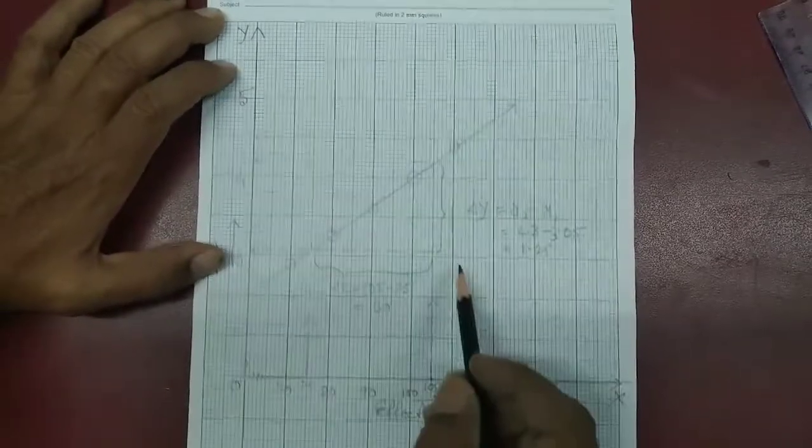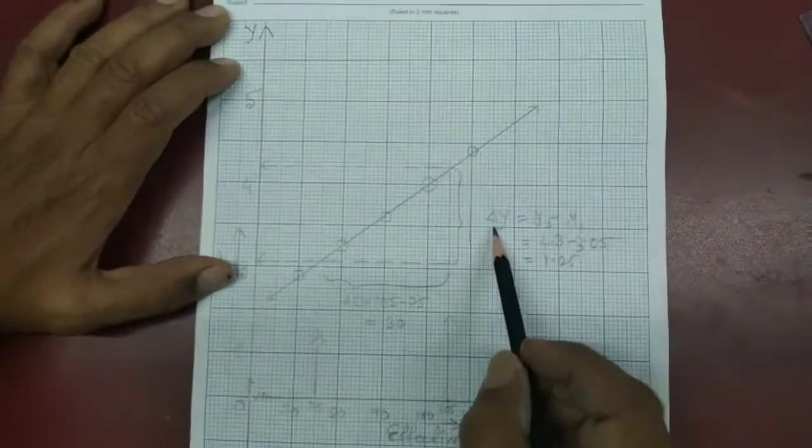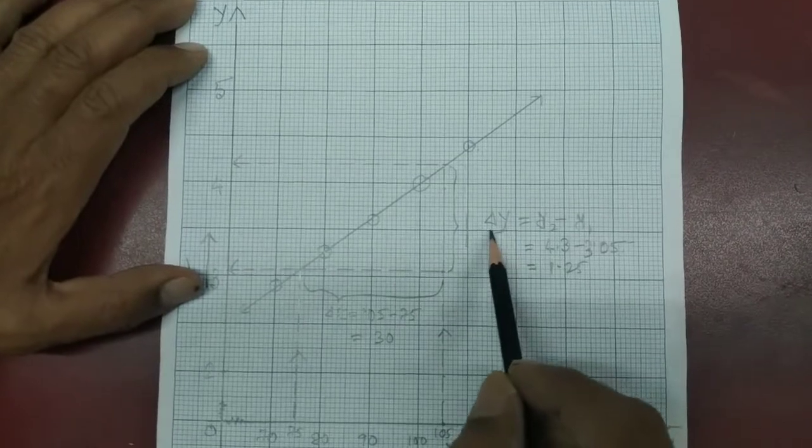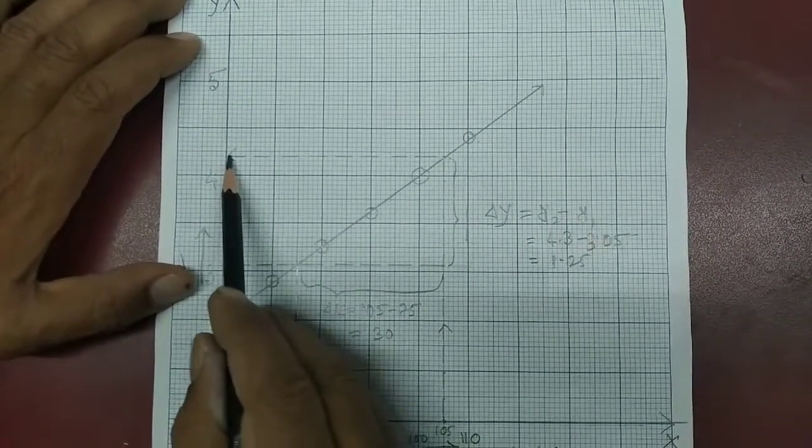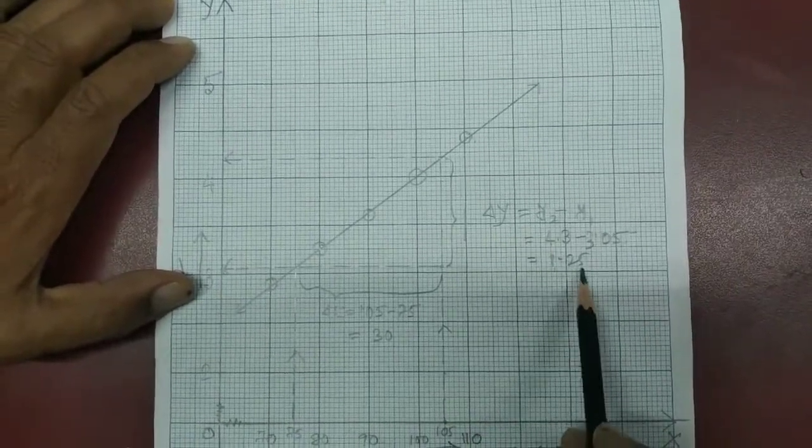to calculate the slope, we need the difference of Y value, means ΔY. ΔY is equal to Y2 minus Y1. This is Y2, this is Y1. So ΔY is equal to 1.25. And